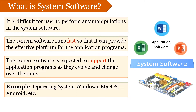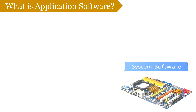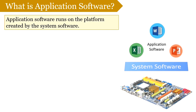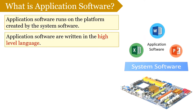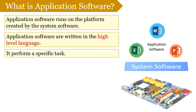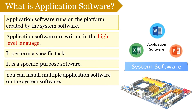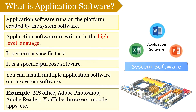The application software runs on the platform created by the system software. They are written in high-level language. Each application software is designed to perform a specific task — that's why we call it a specific purpose software. However, you can install multiple application software on the system software. Examples of application software are all the tools of MS Office, Adobe Photoshop, Adobe Reader, YouTube, Browsers, Mobile Apps, etc.